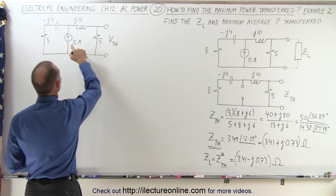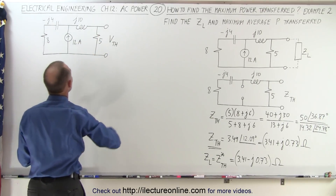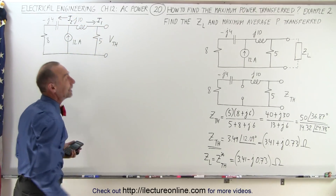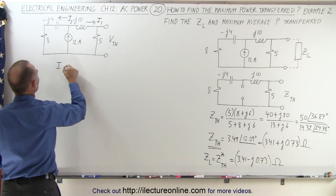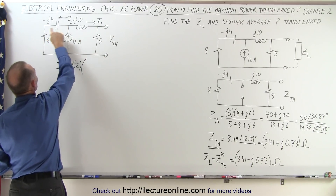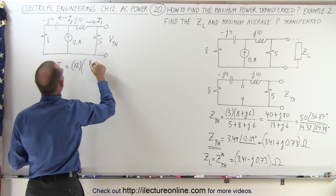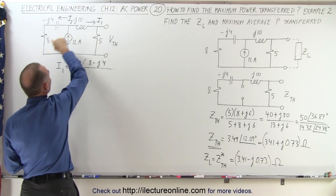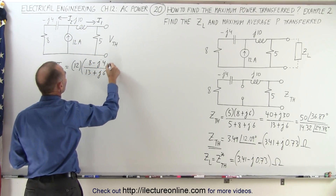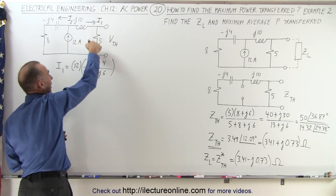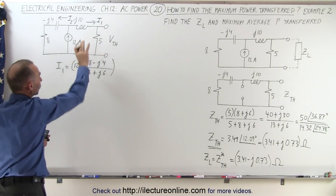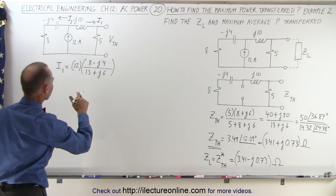Now we need to find the Thevenin voltage. With the current source present, we want to find the current through the 5-ohm branch. Let's call this i1, the current going in that direction, and i2 the current going in the other direction. i1 is equal to the source current of 12 amps multiplied by the ratio of the impedance on the other branch — that would be 8 − j4 — divided by the total impedance of both branches: 8 plus 5 is 13, and j10 − j4 gives plus j6.